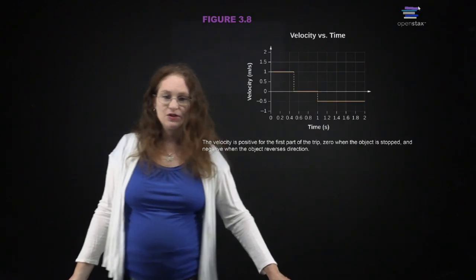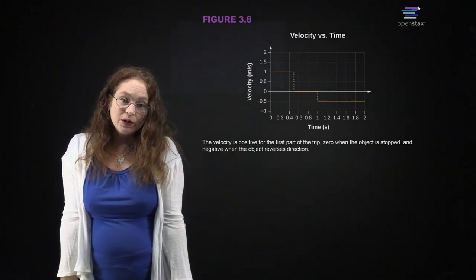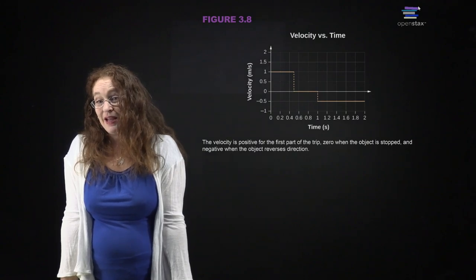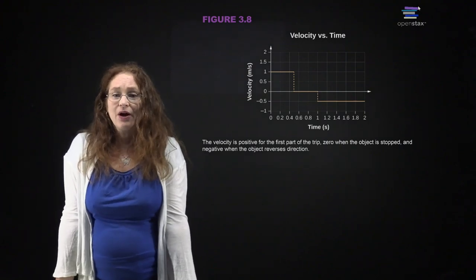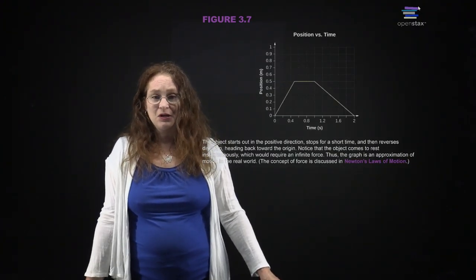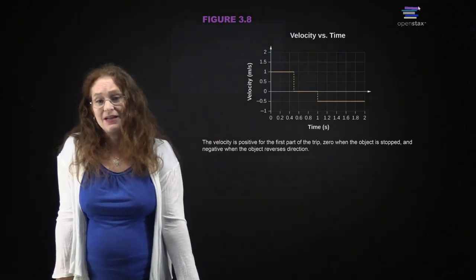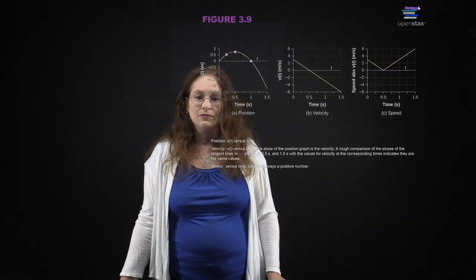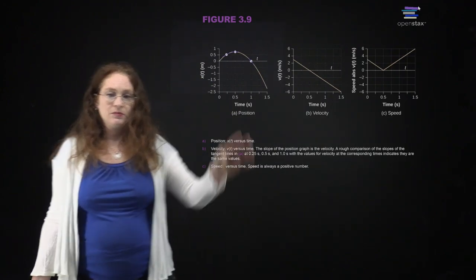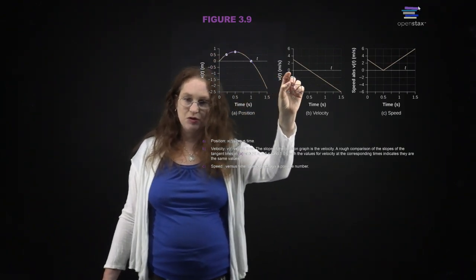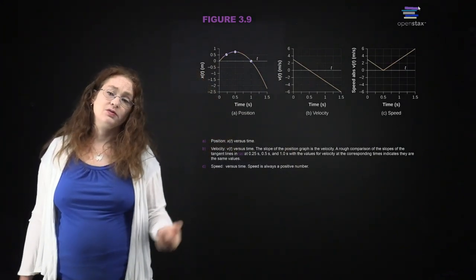Here is another example — taking that earlier plot and calculating the velocity in each chunk by hand. In the first segment, it's moving positive. In the second segment, it has a velocity of zero. And in the last segment, it has a negative velocity. Here we want to distinguish that this is position as a function of time for some object — and this just happens to be a parabola.